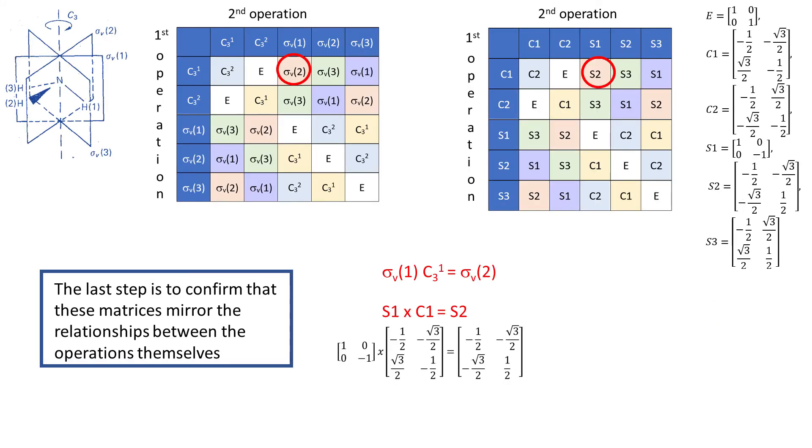So notice that these are exactly the same matrices that we've seen a couple of videos ago. Davidson emphasizes that it's necessary to confirm that these matrices mirror the relationship between the operations themselves. If the Cayley table for the operations and the matrices does not have one-to-one correspondence, then we've made a mistake in deriving the matrices. In our case, it's all fine.